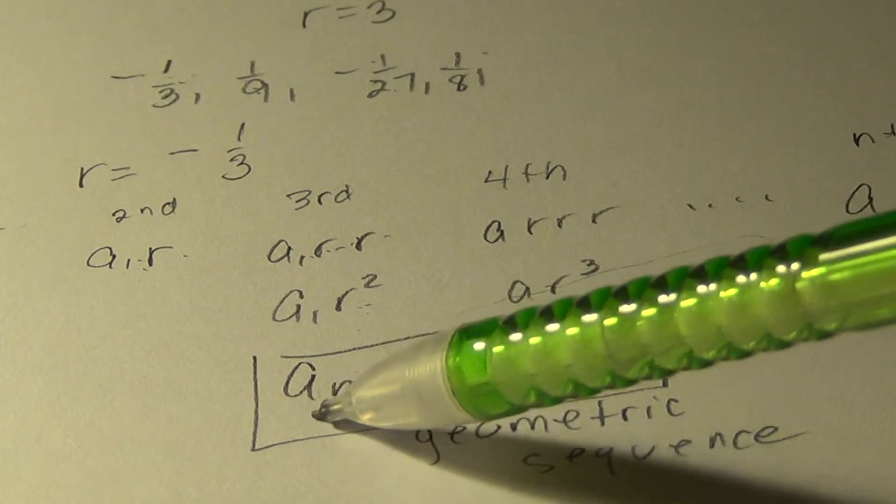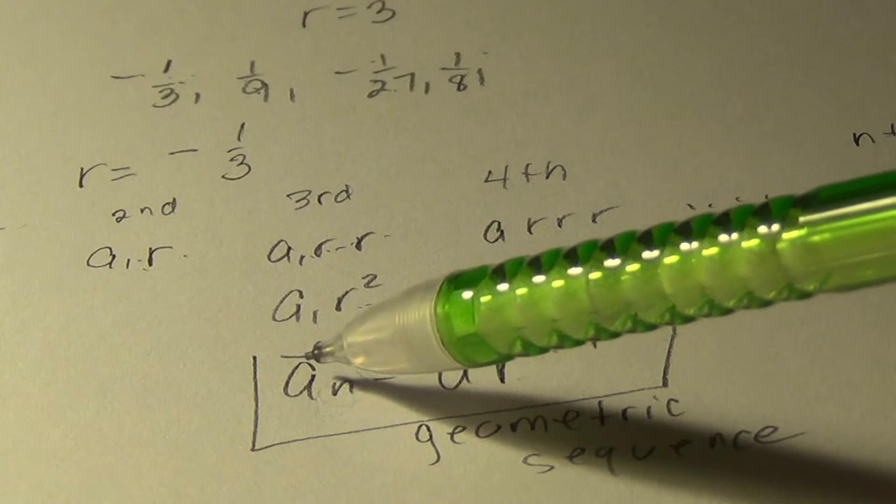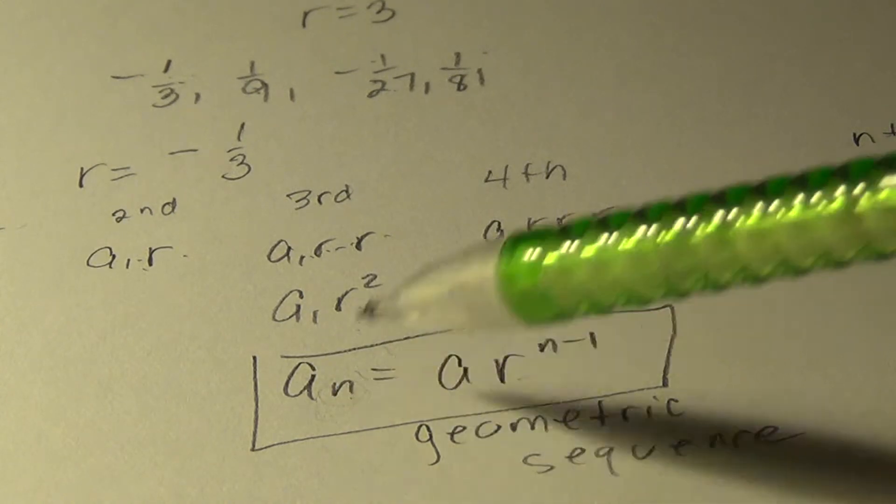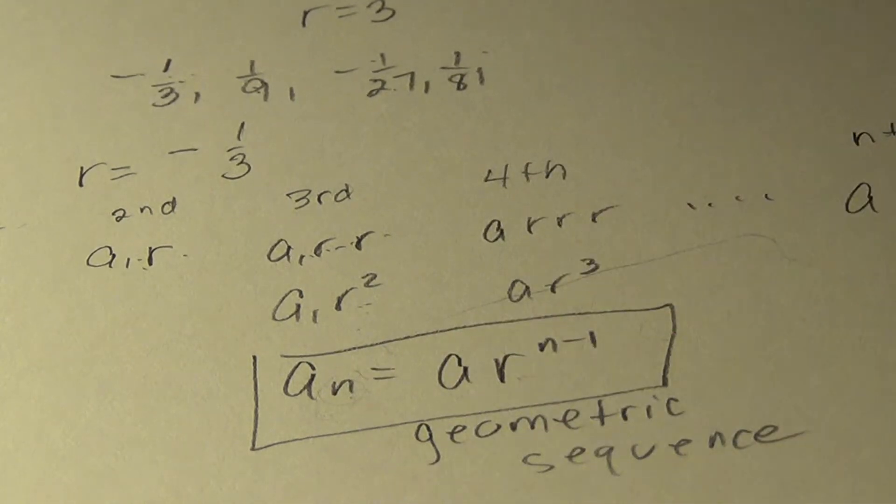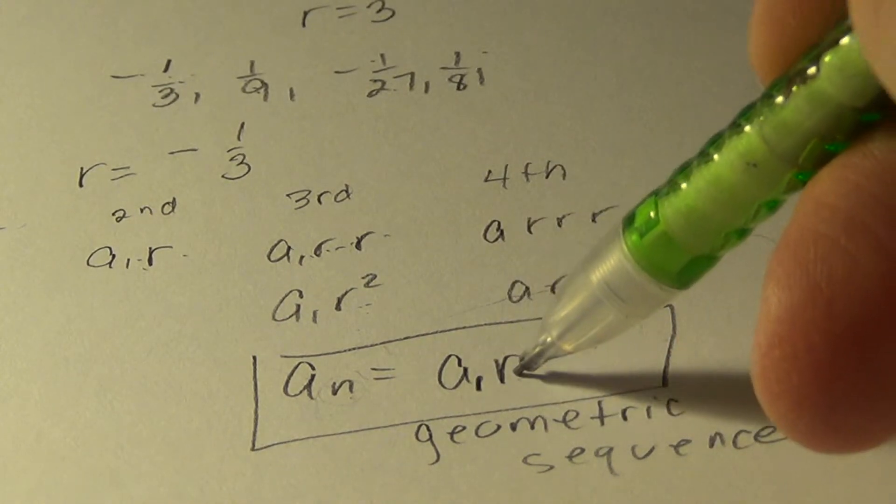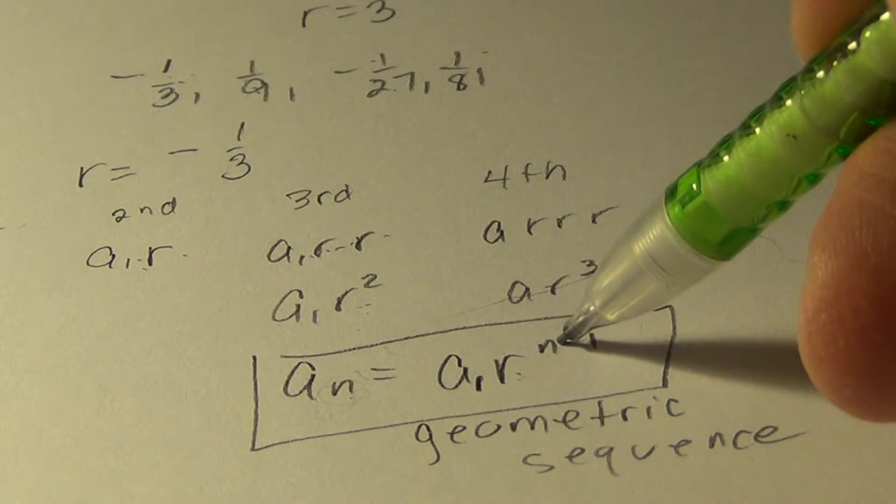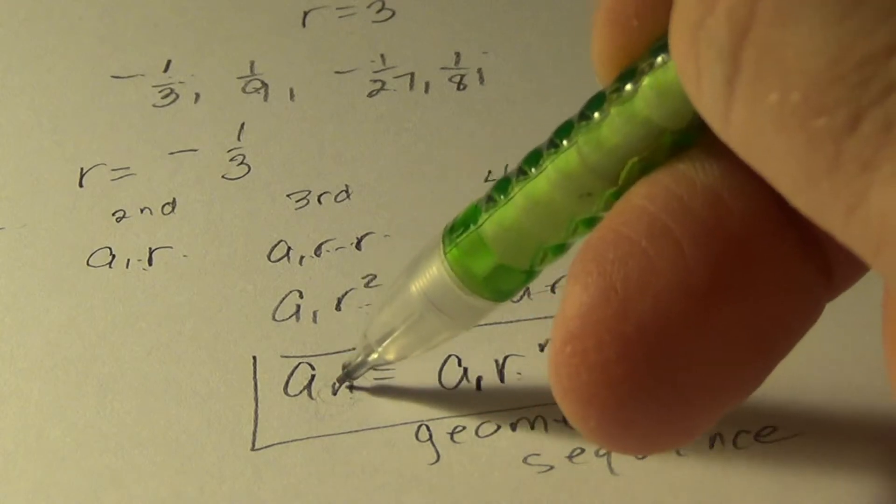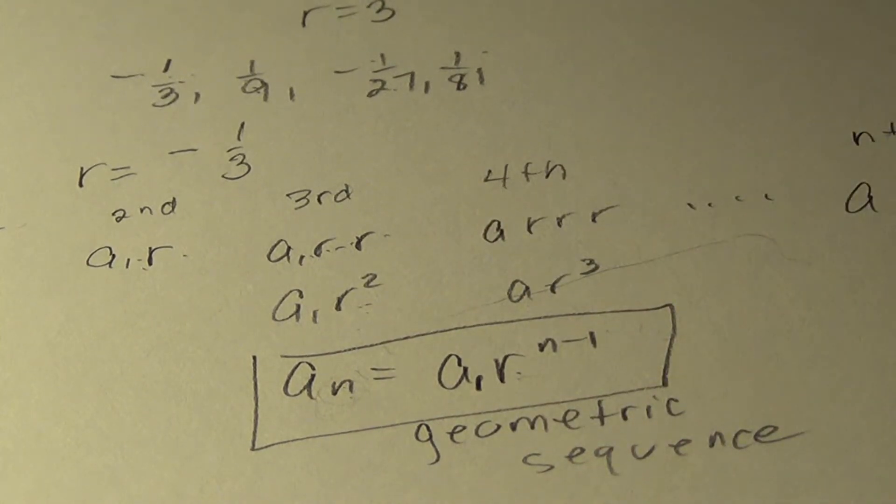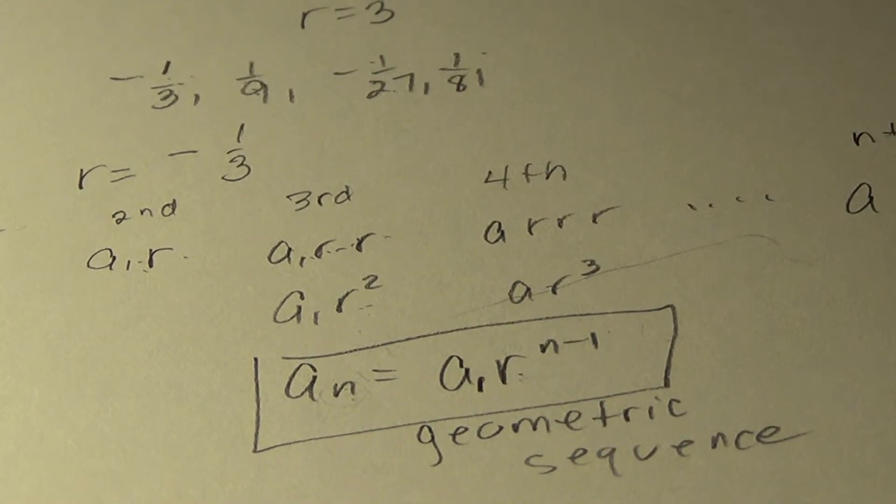This little subscript tells you what term we're in. So like A to the sixth would be A sub one times R, common difference, to the sixth minus one. This n and this n will take the same number.